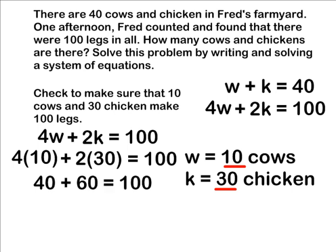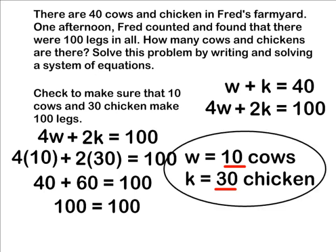4 times 10 gives us 40 cow legs, and 2 times 30 gives us 60 chicken legs, and 40 plus 60 gives us 100 total legs. So we can confidently say that w equals 10 and k equals 30.